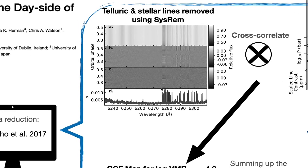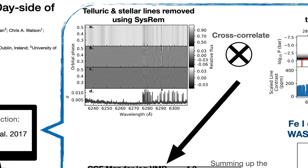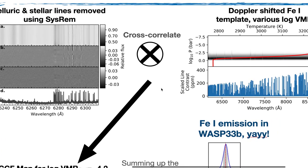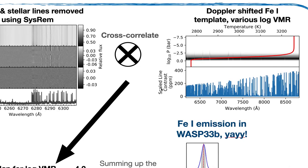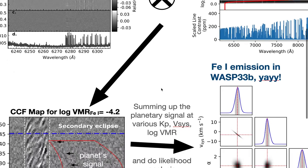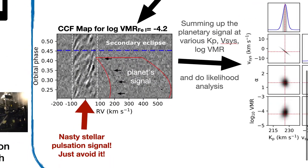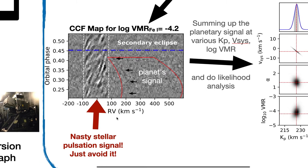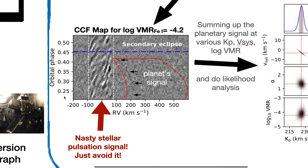Briefly, we remove the telluric and stellar lines using SYSREM. Then we cross-correlate the residuals with a Doppler-shifted neutral iron template for various abundances of neutral iron. We then stack the cross-correlation function into a two-dimensional array with the x-axis as the RV and the y-axis as the orbital phase.